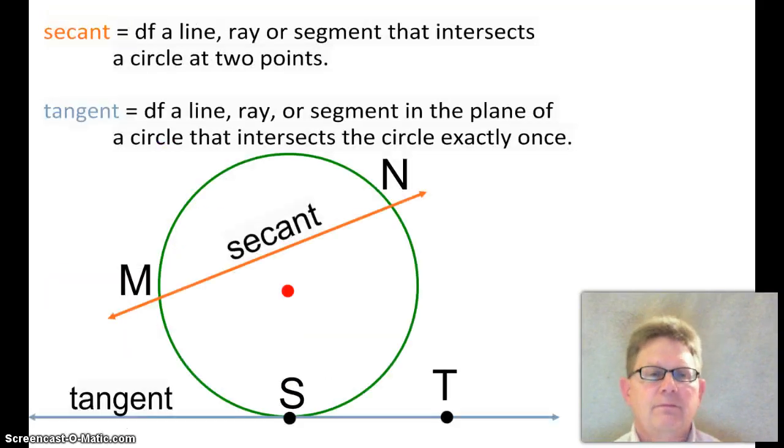Moving right along. A secant is defined as a line, ray, or segment that intersects a circle at two points. Line MN is a secant. A tangent is defined as a ray or segment in a plane in the plane of a circle that intersects a circle exactly once. Tangent ST, that line intersects a circle exactly once at S.